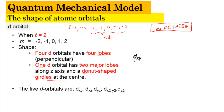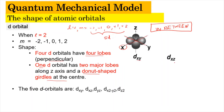For the D orbitals, the key rule is: the lobes lie in between the labeled axes. For dxy, after drawing the X, Y, and Z axes, the four clover-leaf lobes are positioned in between the X and Y axes. This in-between rule applies similarly to dxz and dyz.